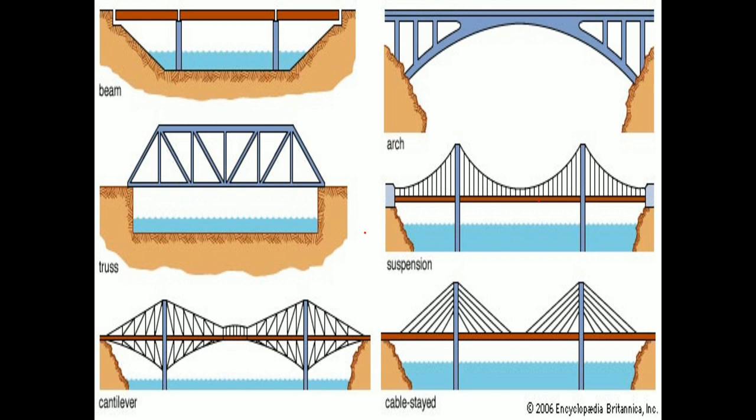Next is the arc bridge. Arc — toh aapko shape se hi samajh aa gaya hoga — a half circle is called an arc. The arc shape is used because it can hold more burden. An arc bridge has an arc — a half circle — under the beam. The shape of the arc helps the top of the bridge to hold a lot of weight.